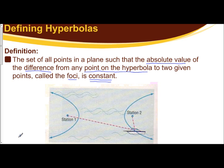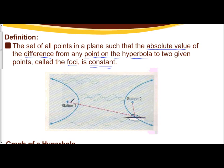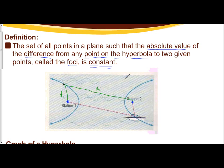Let's use the image below to help us understand this definition. We have station one and station two on some water, and we're looking at these as our foci. If you were to pick any random point on the hyperbola, the distance from one focus to that point is D1, and from that point to the other focus is D2. The absolute value of their difference, D1 minus D2, is going to be constant.